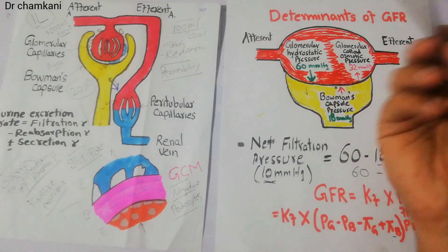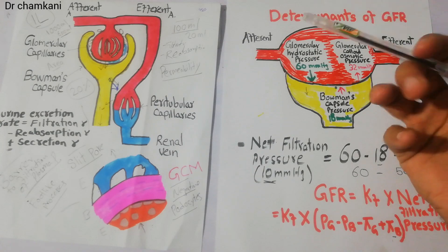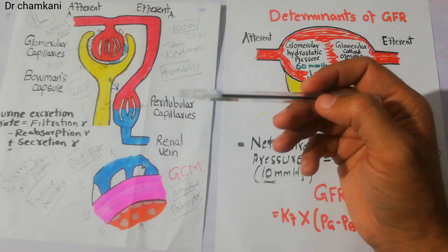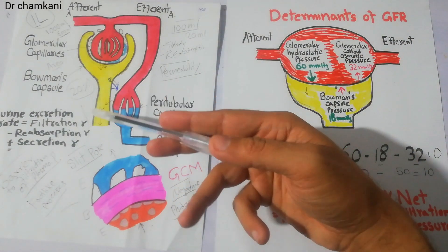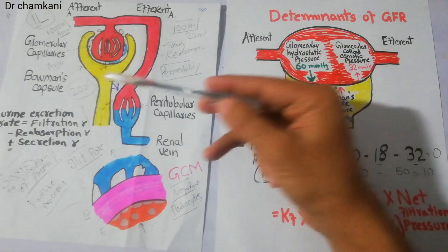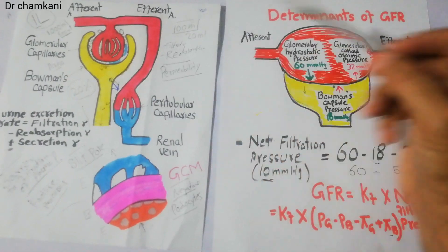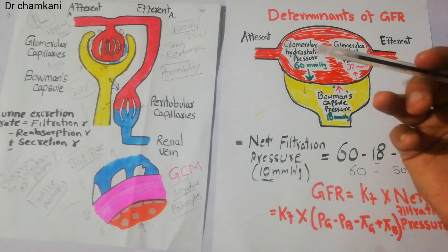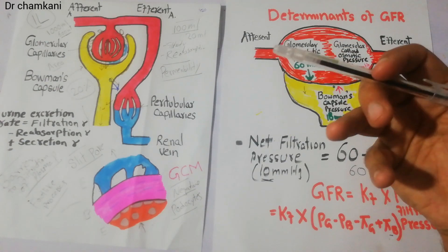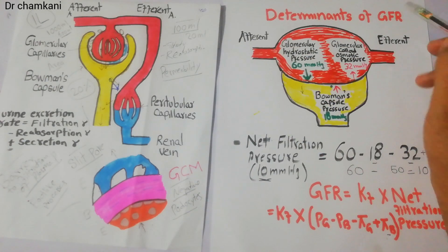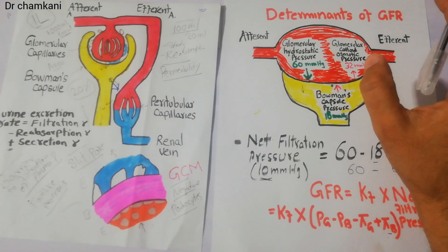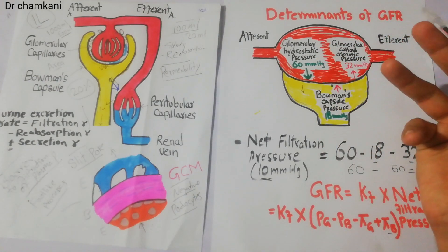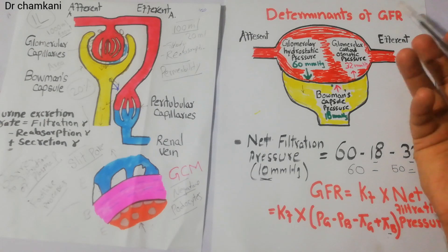The solution is to remove the stone or any obstruction — whether it is a stone, tumor, mass, or fibrosis — any condition causing obstruction to urine flow. If it is removed, the pressure will return to normal, the GFR will become normal, and renal function will be restored. But if it is not removed, the pressure will keep increasing, the GFR will keep falling, and renal failure can ultimately occur. That's it about Bowman's capsule hydrostatic pressure and how it can sometimes affect the GFR.